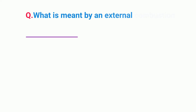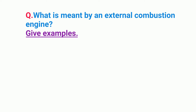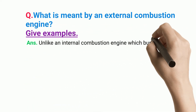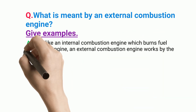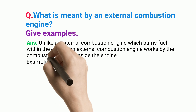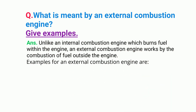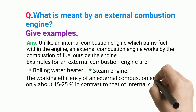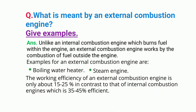What is meant by an external combustion engine? Give examples. Unlike an internal combustion engine which burns fuel within the engine, an external combustion engine works by the combustion of fuel outside the engine. Examples of an external combustion engine are a boiling water heater and a steam engine. The working efficiency of an external combustion engine is only about 15% to 25%, in contrast to that of internal combustion engines, which is 35% to 45% efficient.